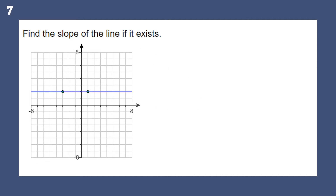Find the slope of the line if it exists. Imagine you're going skiing and I said this hill is a 10 out of 10 difficulty — but you'd say it's not steep at all. The slope of this one is zero because this is just a flat horizontal line at y equals 2.